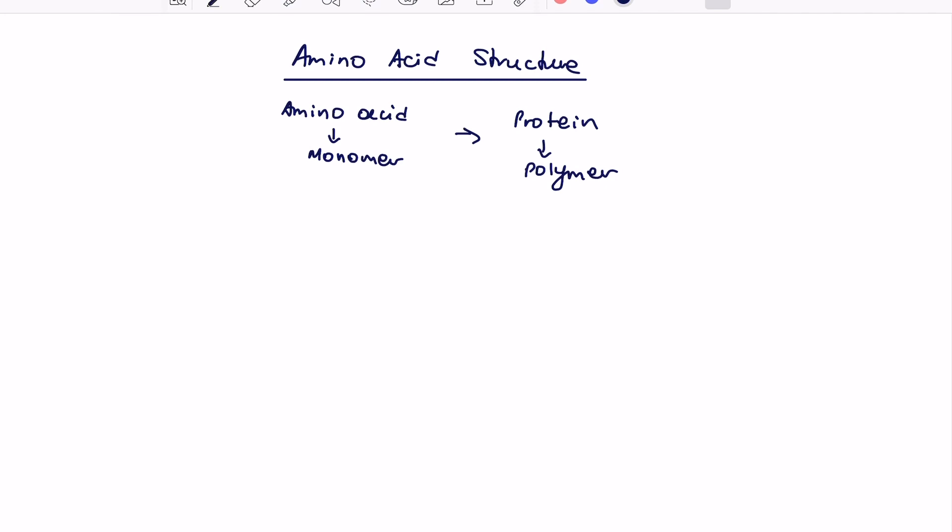So remember, the definition of a polymer is many monomers joined together, and in this case, amino acids will make polypeptides, which will then fold and make a protein.